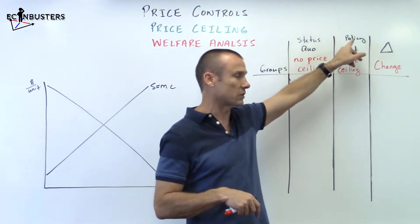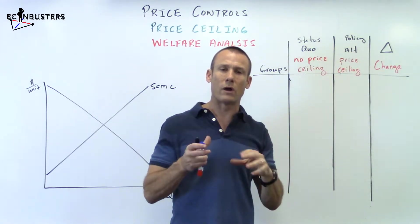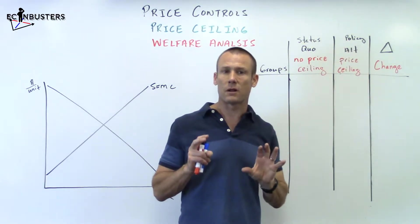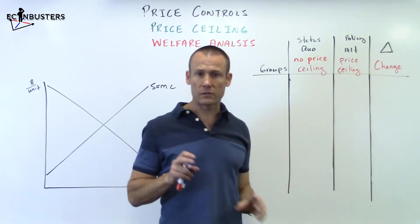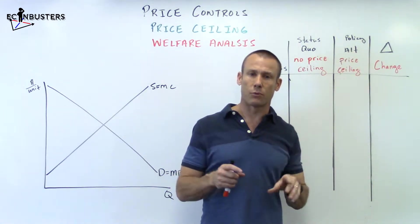But then we're going to do a policy alternative. We're going to look at what would happen if we get a price ceiling and analyze that, do a welfare analysis of that. And then once we get these two different types of policies, we're going to look at the delta or the change. When you do a welfare table, it's this delta column that is the most important.